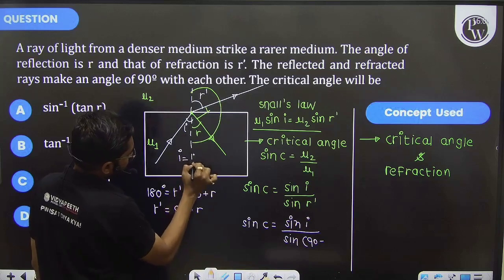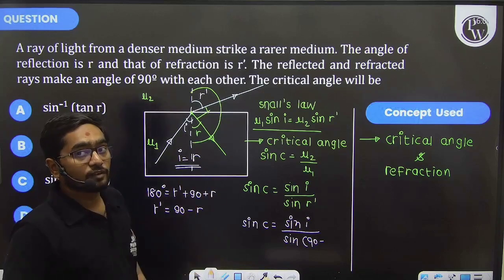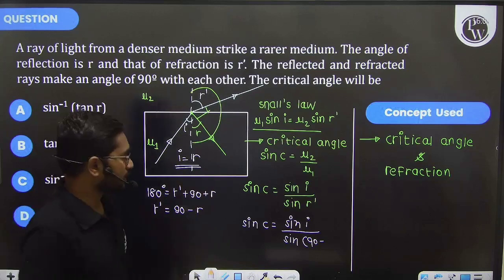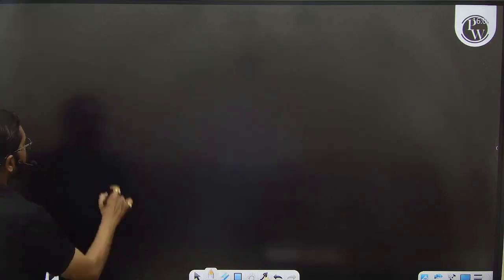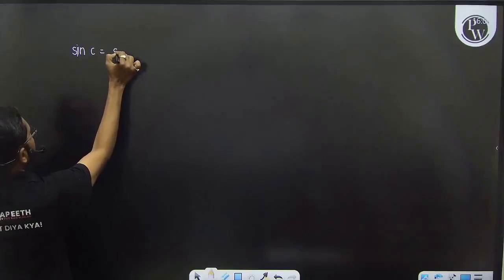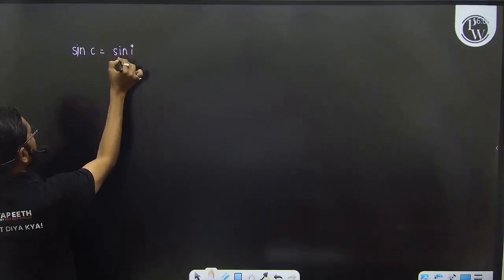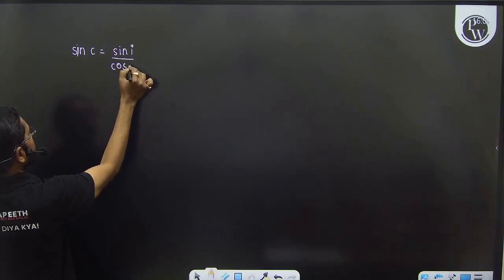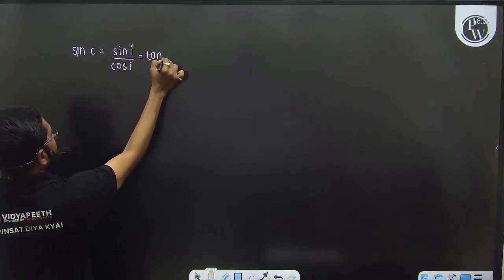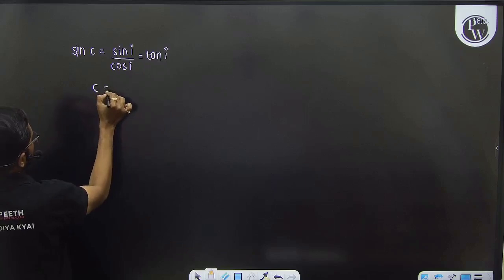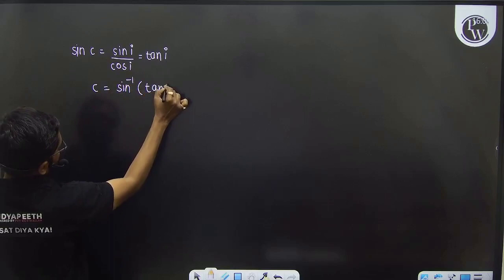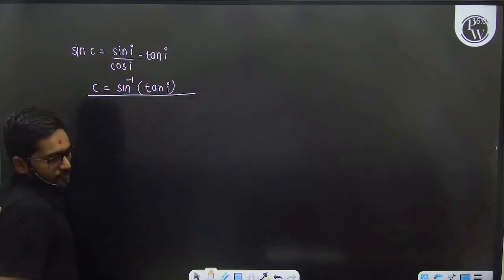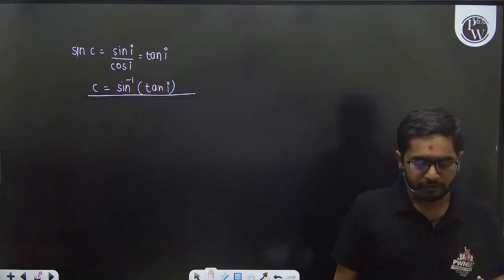So sin c equals sin i over sin(90 minus r). This r equals i because angle of incidence and angle of reflection are always the same. So sin c equals sin i over sin(90 minus i), which equals sin i over cos i, which equals tan i. Therefore, c equals sin inverse of tan i.